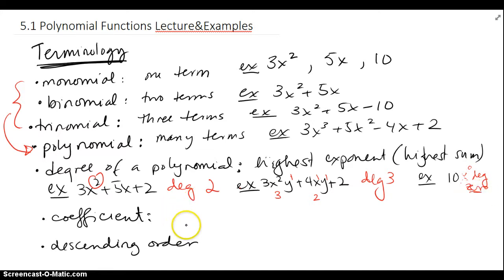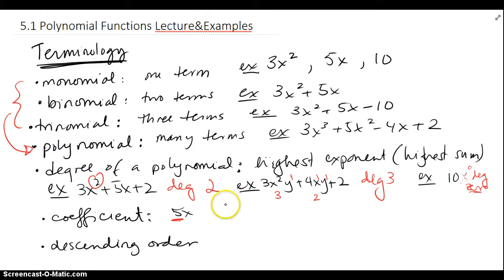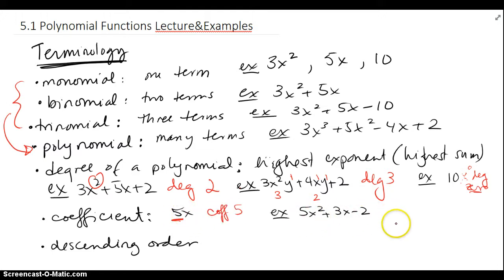The coefficient is the number attached to the variable. So if I have 5x, the coefficient is 5. Each term has its own coefficient — for example, the coefficient of x here would be 3, and the coefficient of x squared would be 5.